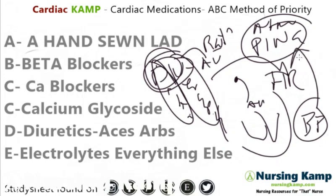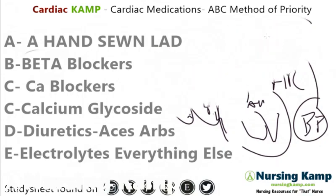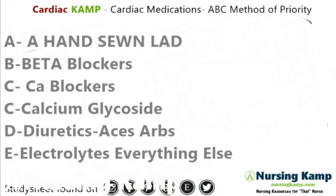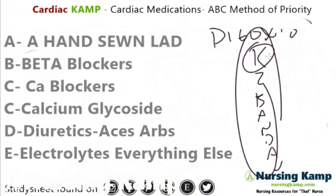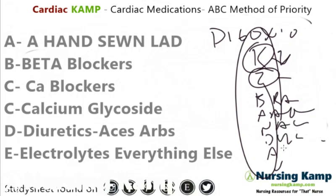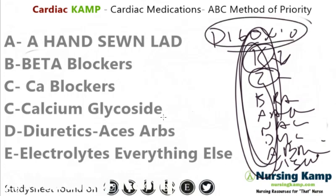The next one is cardiac glycosides. Glycosides are important because that's digoxin. Digoxin monitoring is K2-BAN-AV. We monitor potassium being low, we monitor the level being 2, bradycardia, anorexia, nausea, dysrhythmias, diarrhea, abdominal pain, and visual halos. So there's a lot to monitor with digoxin. You would think it would be acute, but it is more of a chronic medication because you need a level in it.